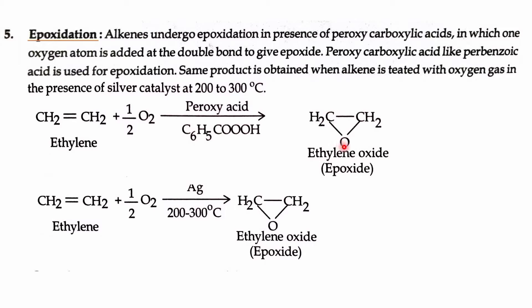This is an epoxide structure — a chain having two carbons and one oxygen. The epoxide is formed using a peroxide in the presence of a carboxylic acid.